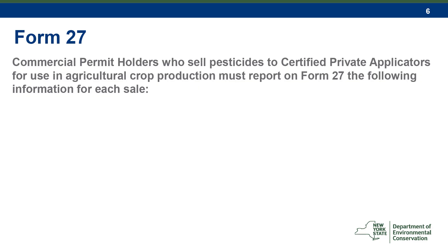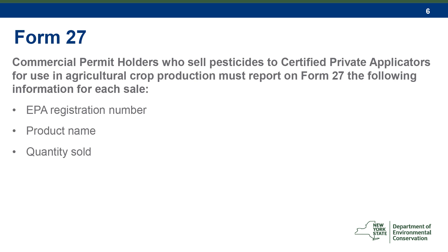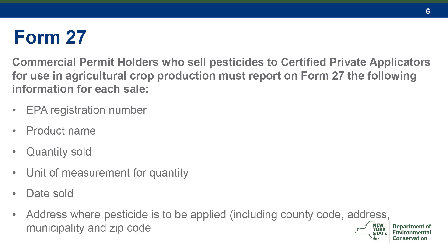Form 27 must be used by commercial permit holders who sell pesticides to certified private applicators for use in agricultural crop production. Form 27 must include the following information for every sale: the EPA registration number, the product name, the quantity sold, the unit of measurement for that quantity, the date sold, and the address where the pesticide is to be applied, including the county code, address, municipality, and zip code.